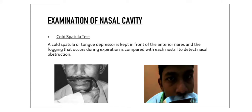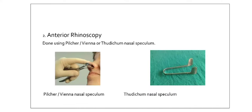Examination of the nasal cavity: the first test is the cold spatula test. Place a cold spatula or tongue depressor in front of the anterior nares and ask the patient to expire. When the patient expires, fog formation occurs on the cold spatula. Observe the symmetry of the fog formed; if fog on one side is less compared to the other, it means there is some obstruction in that part of the nasal cavity.